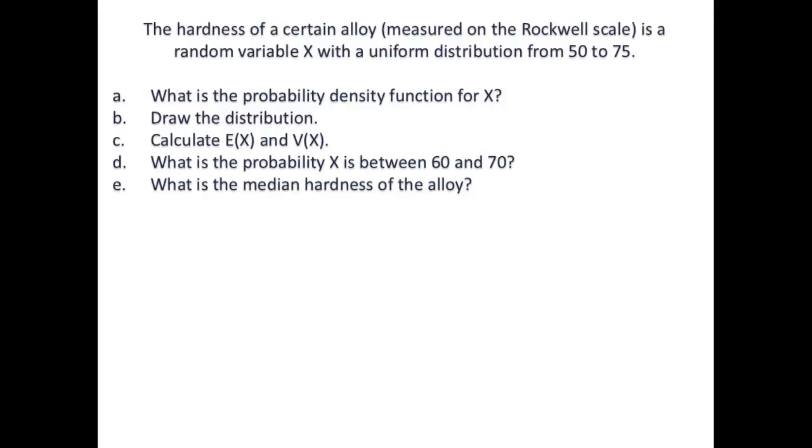What is the probability density function for x? The probability density function for a uniform distribution is f(x) = 1/(b-a), where b is the upper bound and a is the lower bound. So in this case, this would be 1/(75-50) or 1/25, existing for x between our lower bound of 50 and our upper bound of 75. So this is our probability density function from 50 to 75.